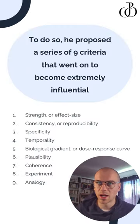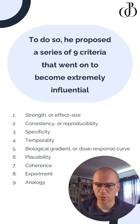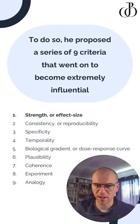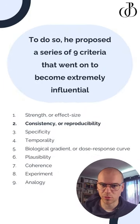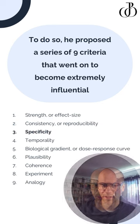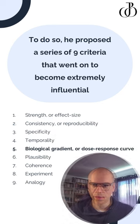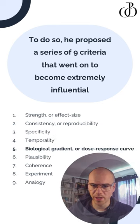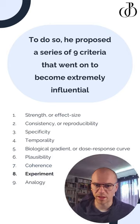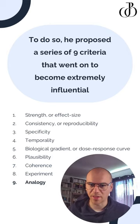To do so, he proposed a series of nine criteria that went on to become extremely influential: strength or effect size, consistency or reproducibility, specificity, temporality, biological gradient, plausibility, coherence, experiment, and analogy.